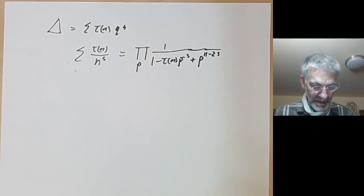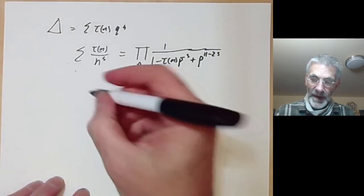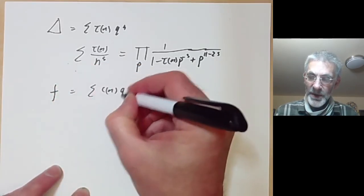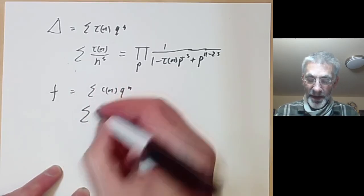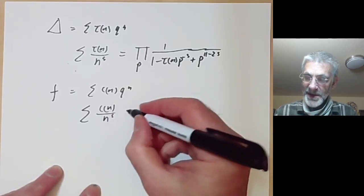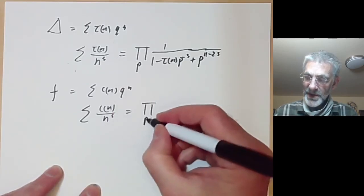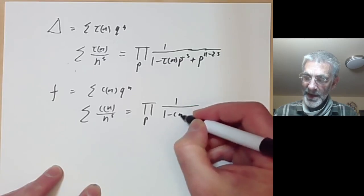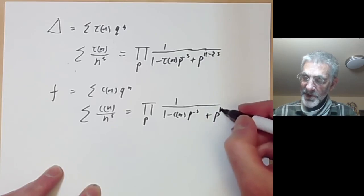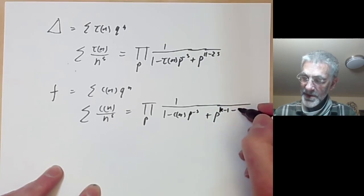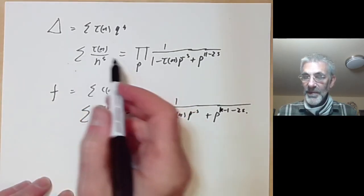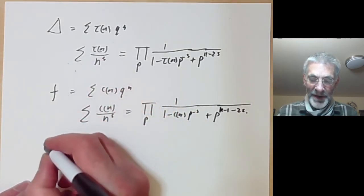For any other modular form of weight k — say Σ c(n) q^n — the corresponding Dirichlet series has a corresponding Euler product: the product over p of 1/(1 − c(p) p^{-s} + p^{k−1−2s}), where 11 is replaced by k−1. For τ(n) we also have the Ramanujan conjecture.